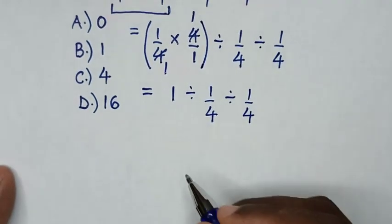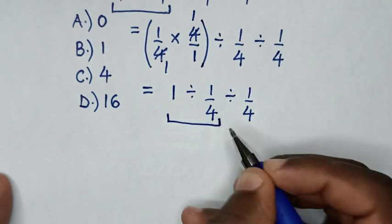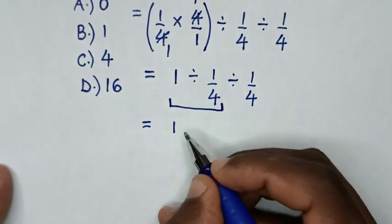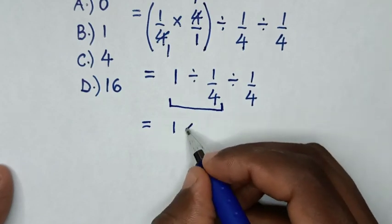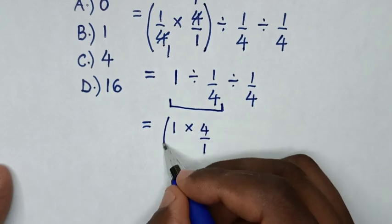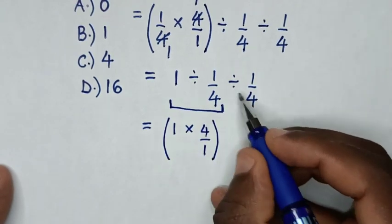Then, in next step, we start to deal with this first operation. It will be equal to 1 divided by 1 over 4, which is same as times 4 over 1, then bracket, divided by 1 over 4.